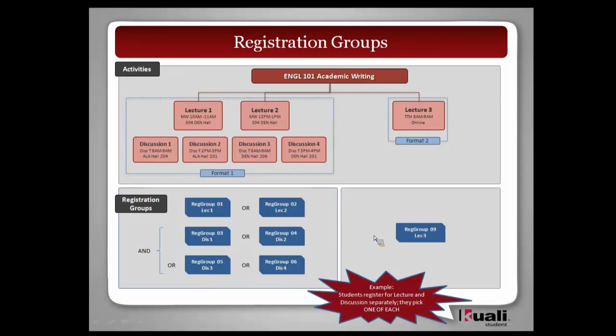Another example of how you, as an individual institution, can make these decisions — the flexibility is built in to allow you to separate those registration groups into their smaller components. In this instance, you can see we still have the same two lectures, but you choose one of those two lectures, and then independently you choose one of the four discussion groups, and register for both of them as a combination.